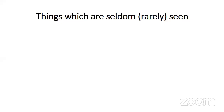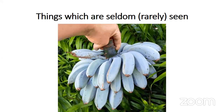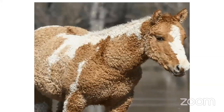I will tell you what the meaning of seldom is — things which are seldom seen are rarely seen; they are not easy to find. You cannot see them everywhere. Look at these bananas, a bunch of bananas. Have you seen blue colored bananas? I have never seen them — they are so rare. We have seen only yellow bananas and green bananas, but look at these blue colored bananas. They are very rare things. Look at this picture — you see a horse with curly hair. You must have seen horses with silky hair, but this horse has curly hair. How lucky! This is a very rare phenomenon.